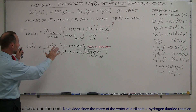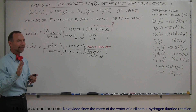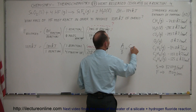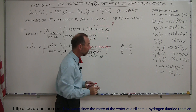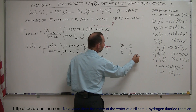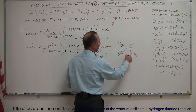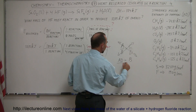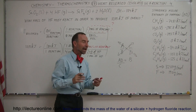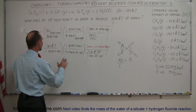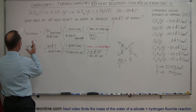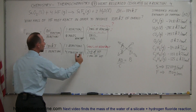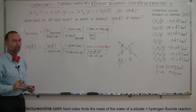Now we have to isolate the mass of the reactant using the following algebraic technique. If we have A over B equals C over D — two fractions equal to each other — we can move any item across the diagonal. So A times D equals B times C. We can move things along the diagonal whenever we have two fractions set equal to each other. The same applies here.